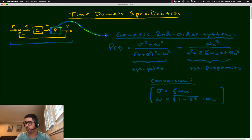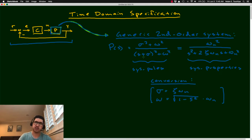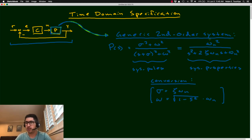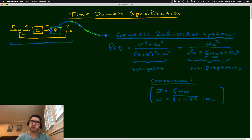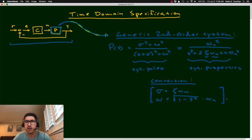We're going to study a second-order system in its most generic form. There are two versions of the second-order transfer function: one in terms of the system poles — S equals minus sigma plus or minus j omega, where sigma is the real component and omega is the imaginary component — and another in terms of system properties, which are zeta (the damping ratio) and omega_n (the undamped natural frequency). A conversion factor allows us to go back and forth between these two versions.